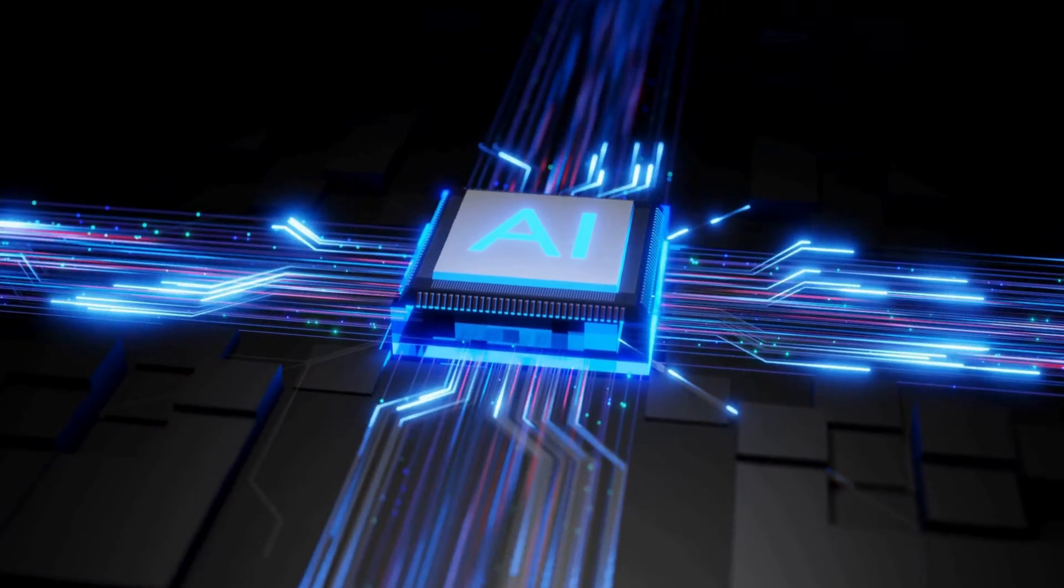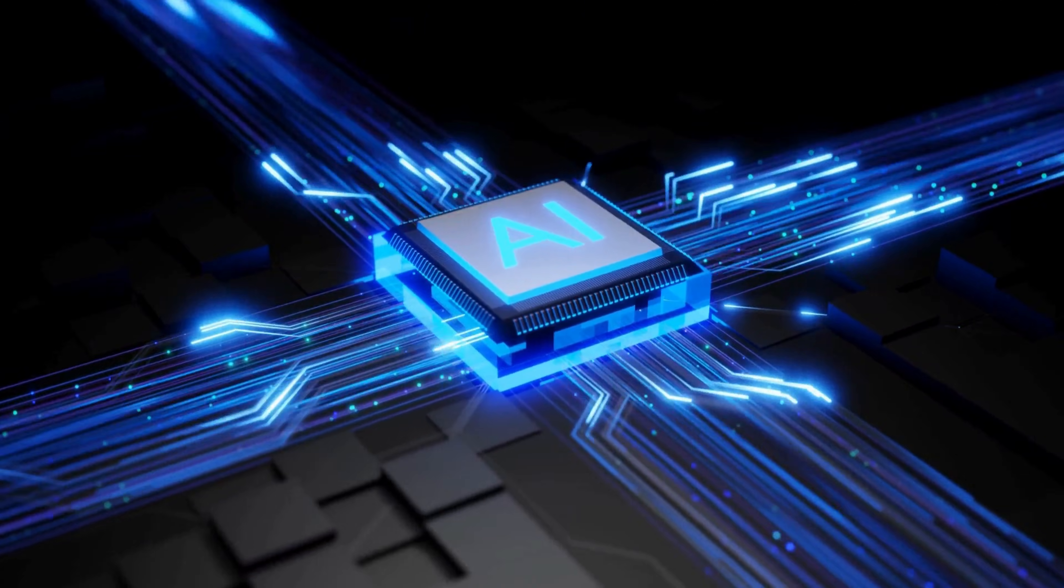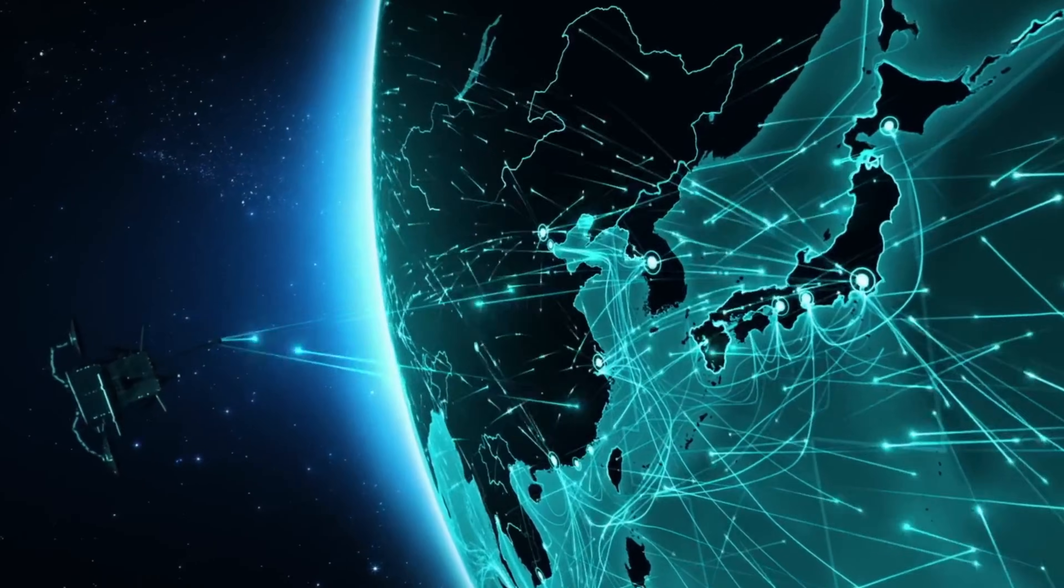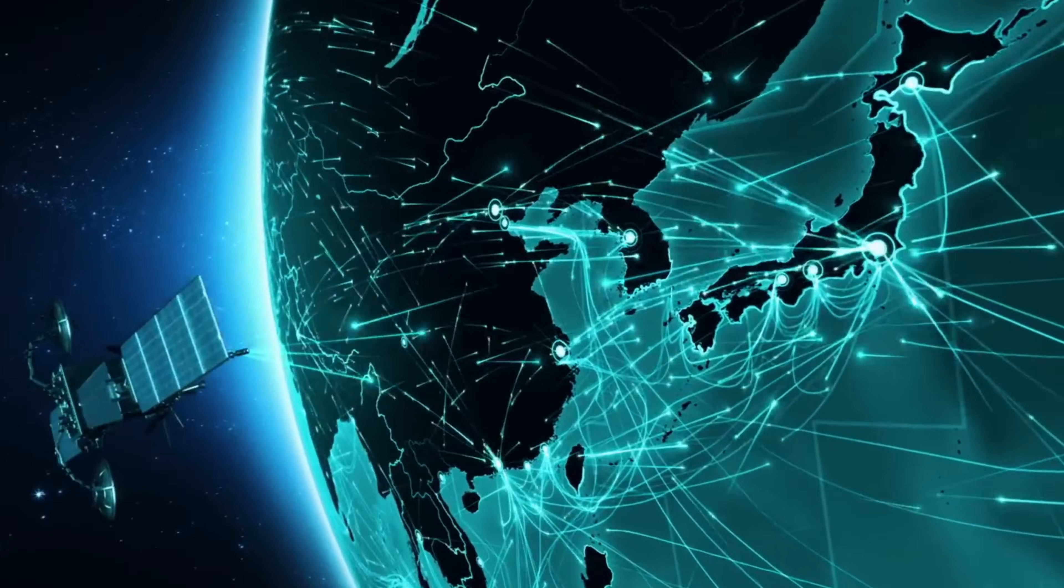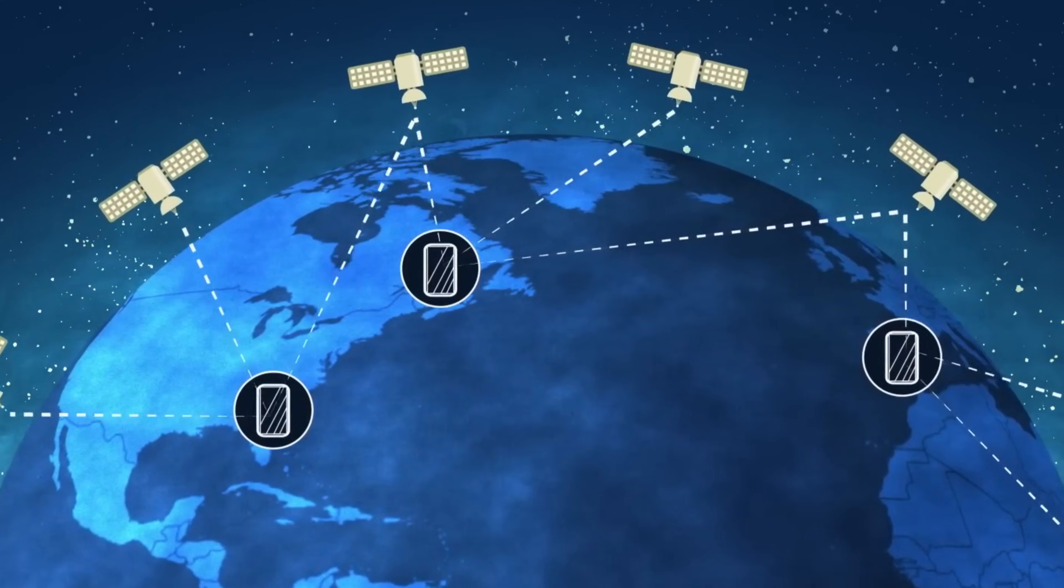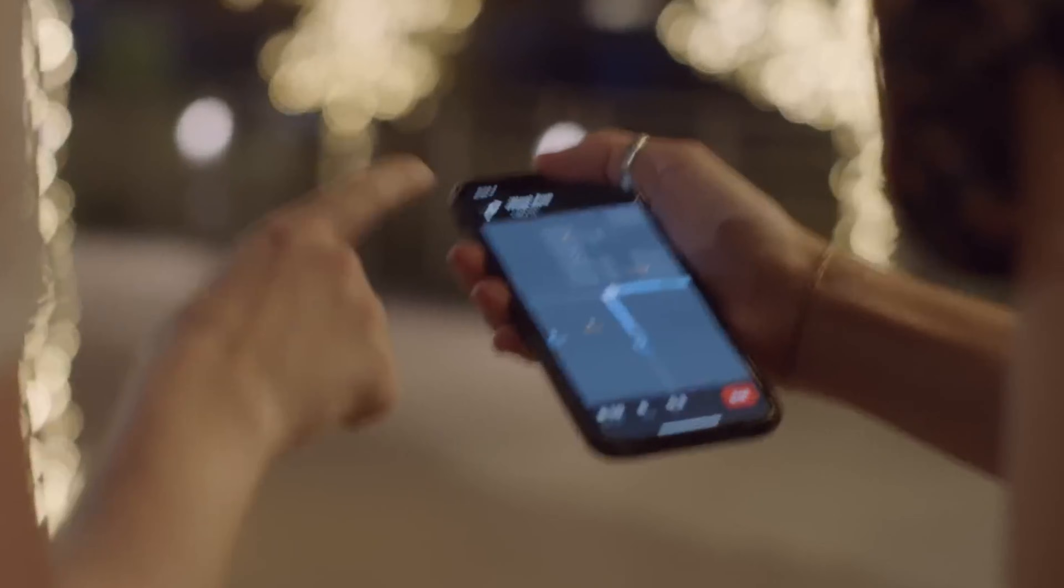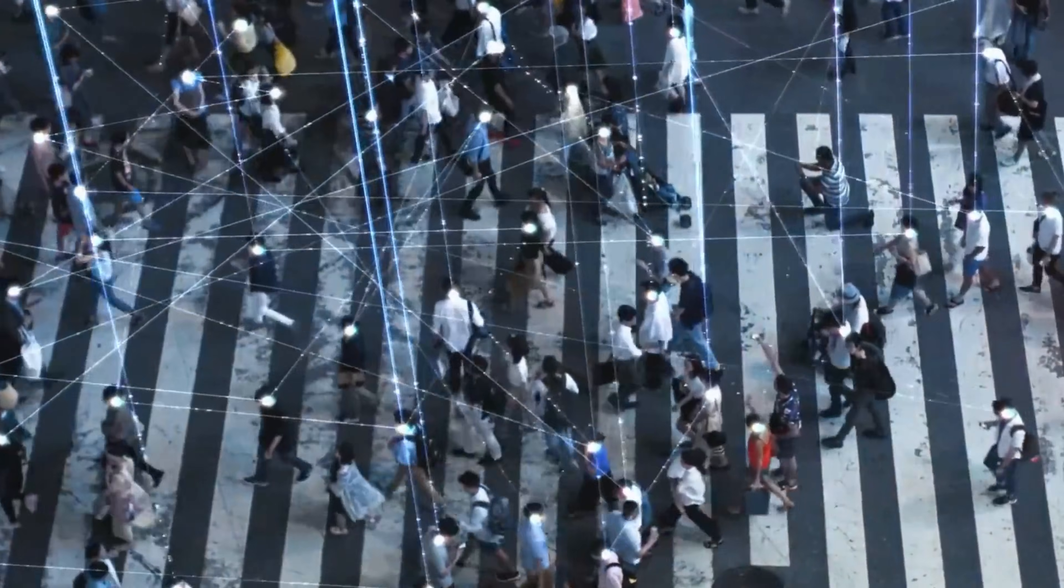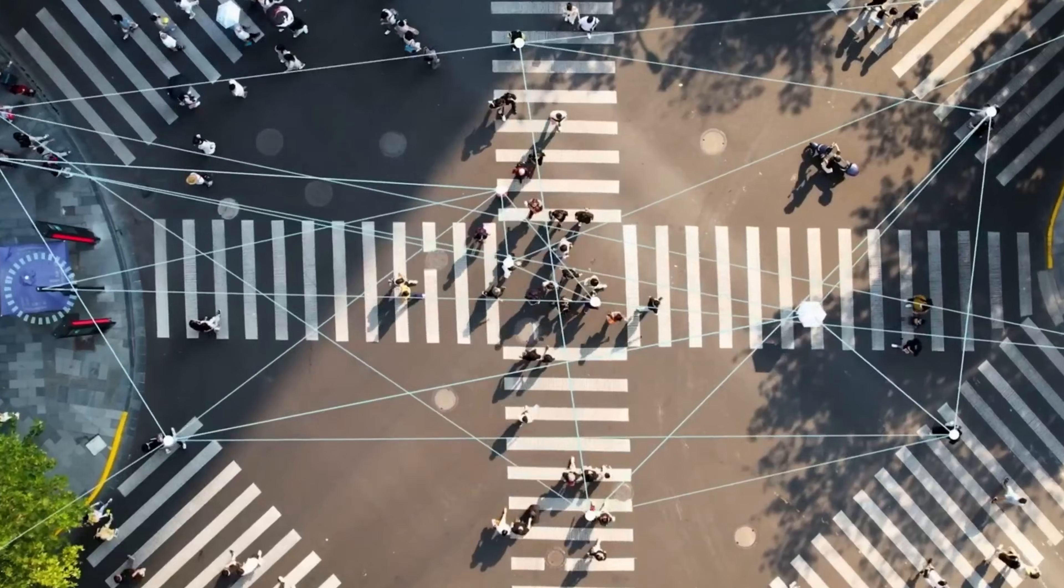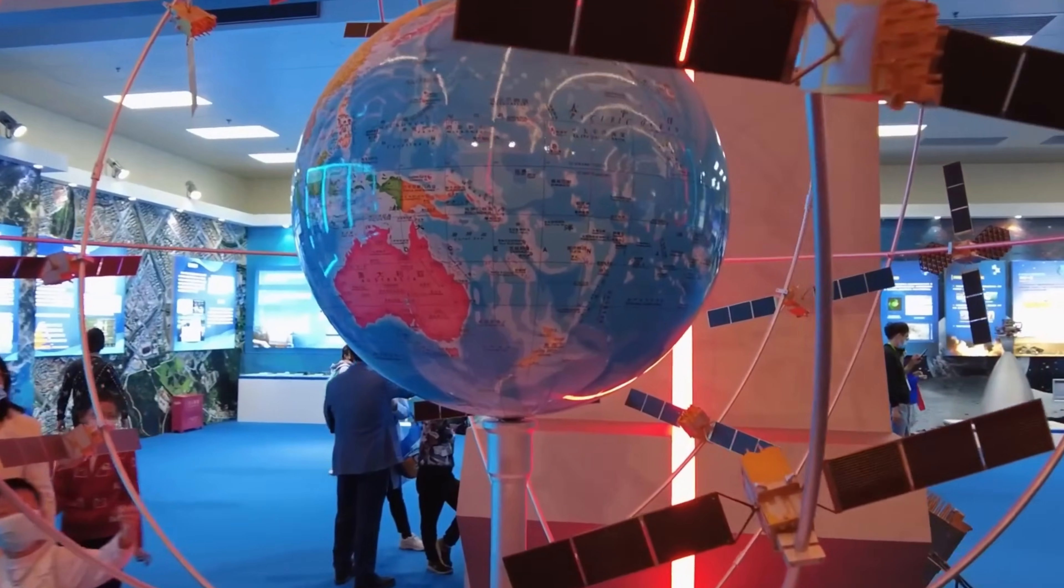But while the microscopic world is being mastered, something even more dramatic is happening above our heads. China's Beidou navigation system now has more satellites than GPS. They built an entire global positioning network from scratch in less than two decades. And it's more accurate. Beidou provides positioning down to four inches. GPS gives you about 16 inches on a good day. But positioning is just the beginning.